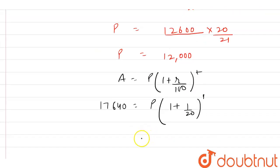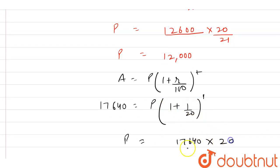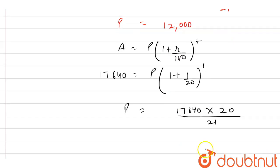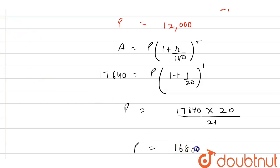From here, the value of P equals 17,640 multiplied by 20 divided by 21. Solving this, the principal amount comes out to be Rs 16,800.